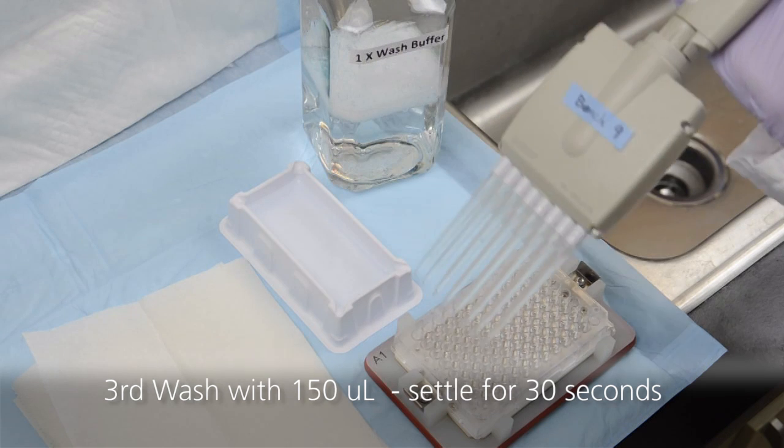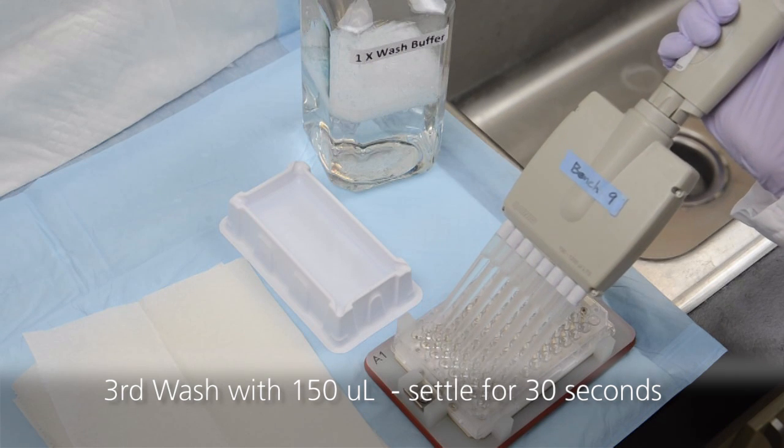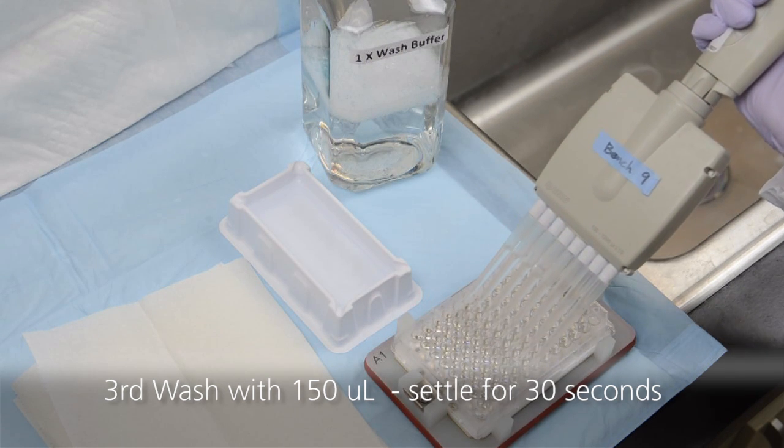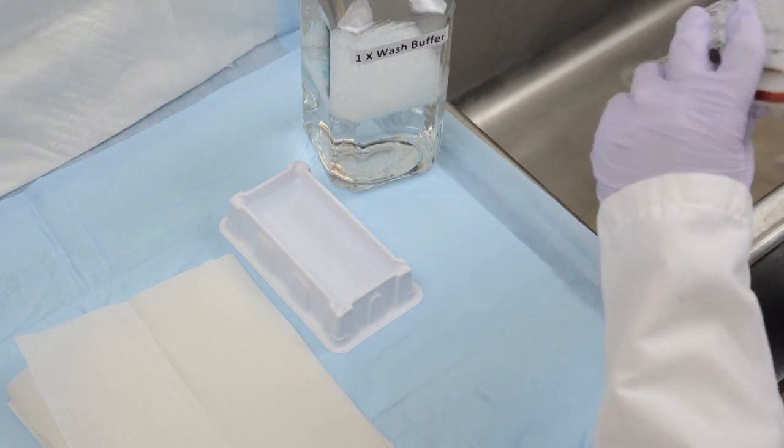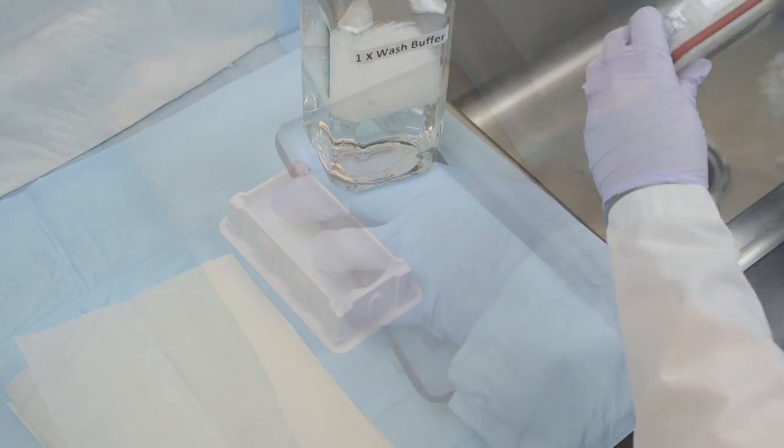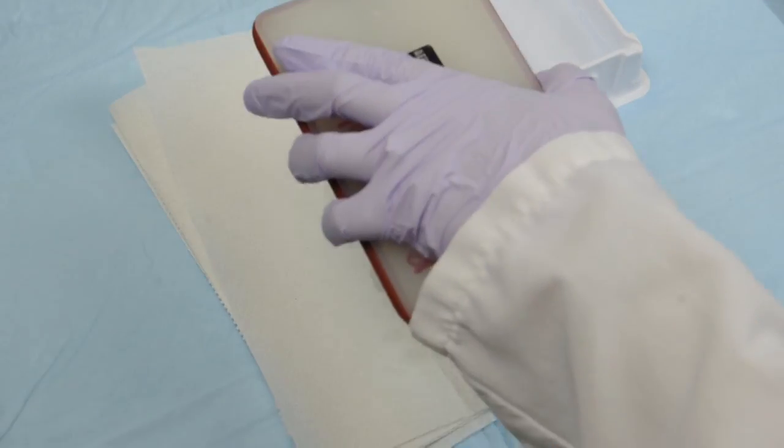Wash the plate for a third and final time by pipetting 150 microliters of wash buffer into each well. Allow the beads to settle to the bottom of the plate for 30 seconds and then invert the assembly over the sink and blot on paper towels.